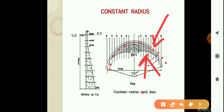In a constant radius arch dam, the arch centers for the upstream face, downstream face, and center line of horizontal arch rings at various elevations lie on a straight vertical line passing through the center of the horizontal arch ring of the upstream face at the crest. This is why it is also known as a constant center arch dam. It is primarily adopted in U-shape valleys and is less economical compared to variable radius and constant angle arch dams.